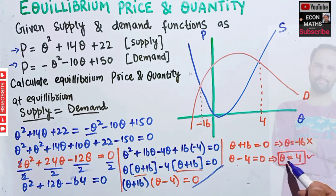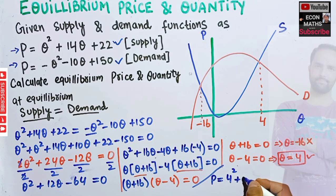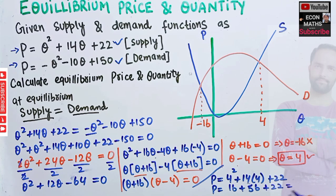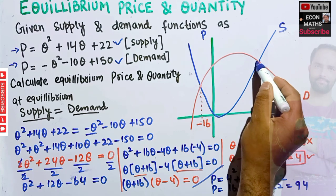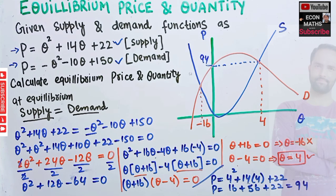To find the equilibrium price, we substitute Q = 4 into the supply function: P = Q² + 10Q + 22 = 4² + 10(4) + 22 = 16 + 40 + 22 = 78. Substituting into the demand function: P = -(4²) - 10(4) + 150 = -16 - 40 + 150 = 94. The equilibrium price is P = 94.